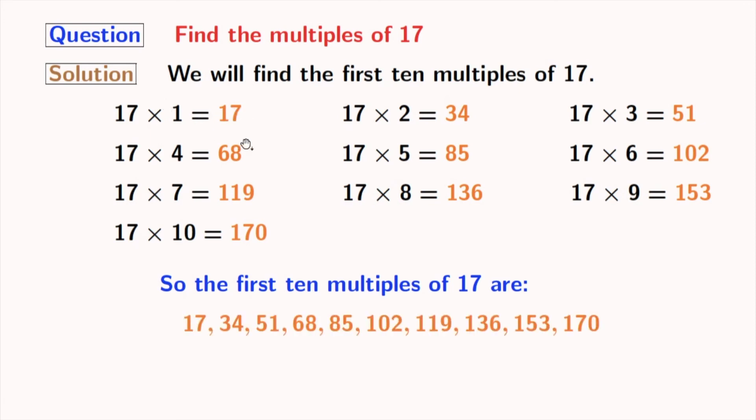The first 10 multiples of 17 are 17, 34, 51, 68, 85, 102, 119, 136, 153, 170.